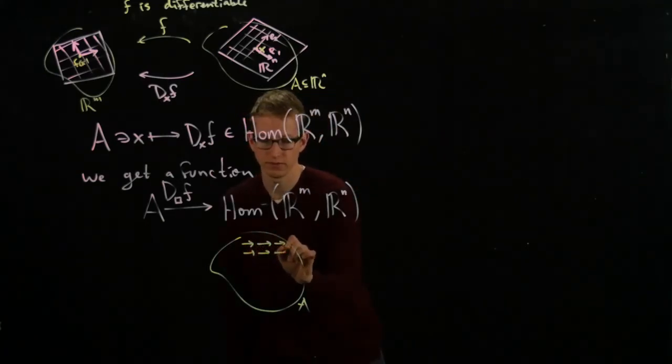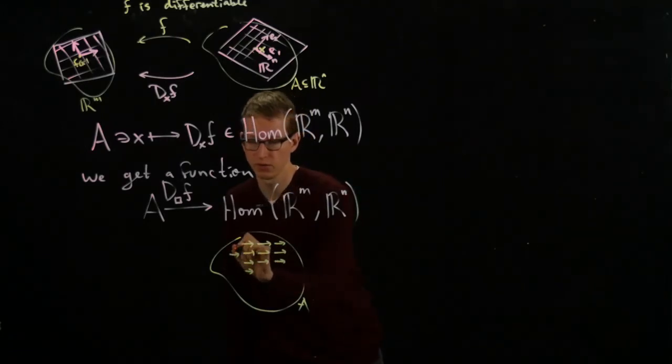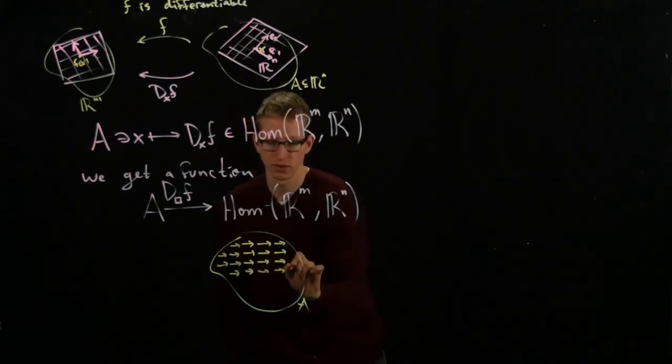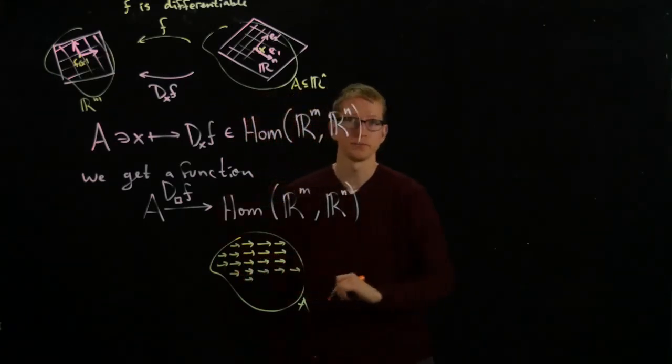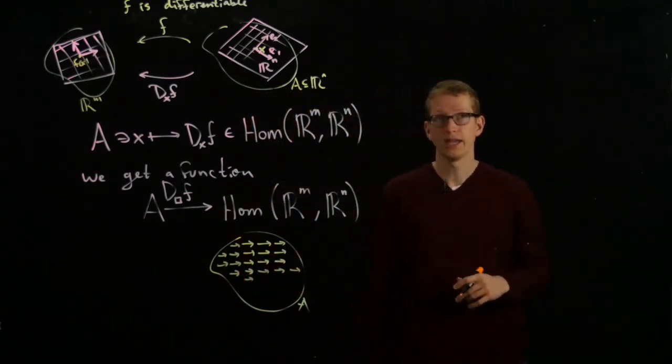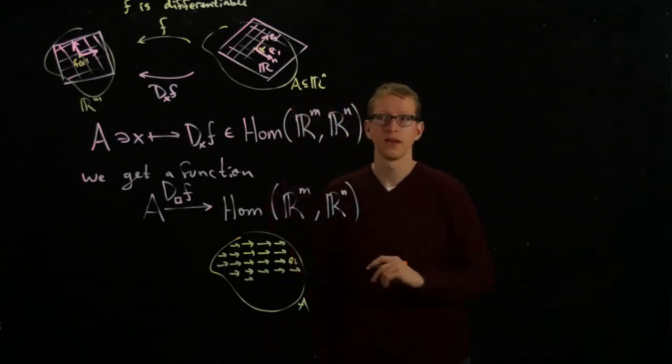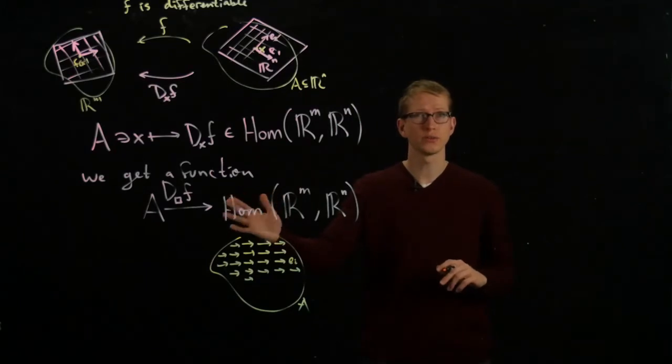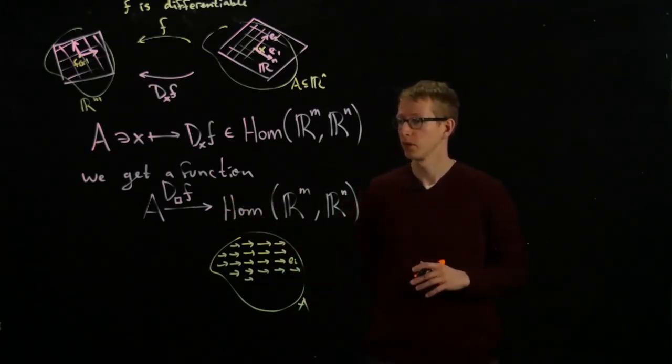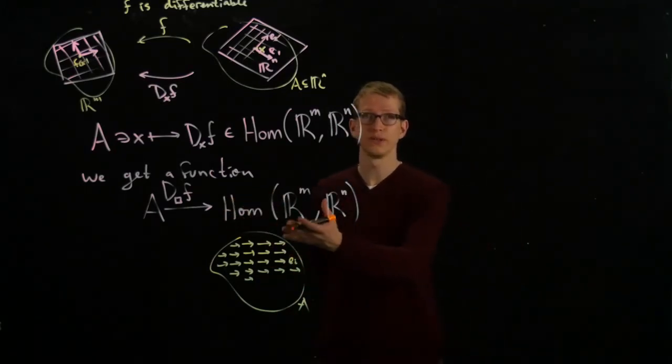So, we have all of these unit vectors everywhere. Let's say they're pointing in the same direction. We're just using the standard basis, and we're looking at these unit vectors all over A, and so on. And the partial derivative, so let's say that these are ei, the partial derivative is very closely related to this function. How do you get the partial derivative from this?